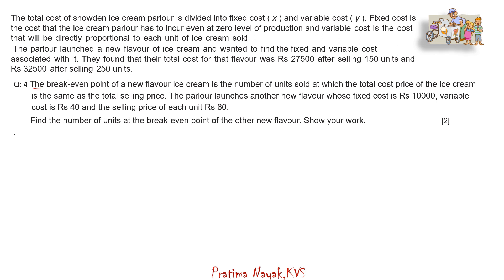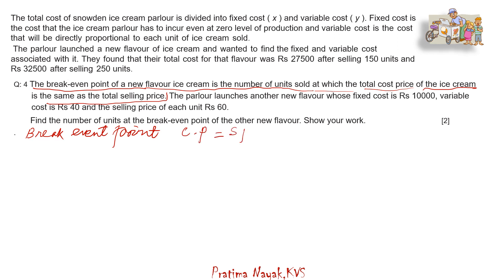Let us re-read question 4. The break-even point of a new flavor ice cream is the number of units sold at which the total cost price of the ice cream is the same as the total selling price. Break-even point means where cost price equals selling price. The parlor launches another new flavor with fixed cost rupees 10,000, variable cost rupees 40 per unit, and selling price rupees 60 per unit. We need to find the number of units at the break-even point.